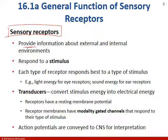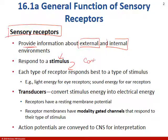Sensory receptors are going to provide us information, not only external but internal. There's always going to be a stimulus and always going to be a receptor. If we remember way back in Chapter 1, we said stimulus, receptor, control center, and then effector. And it depends on the receptor type, which we'll talk about in just a second.